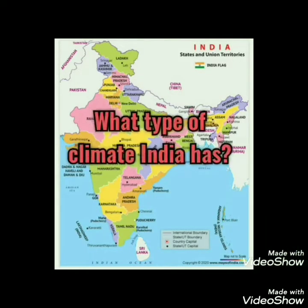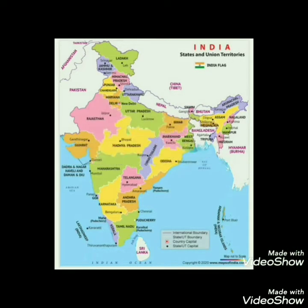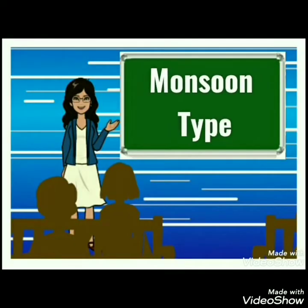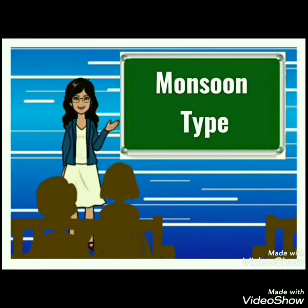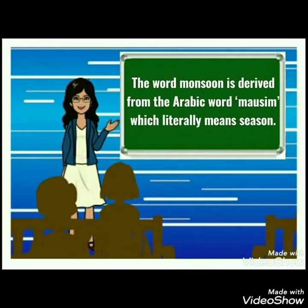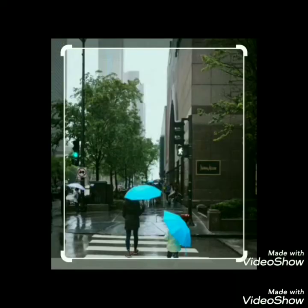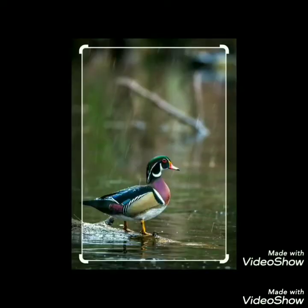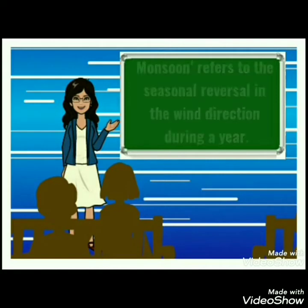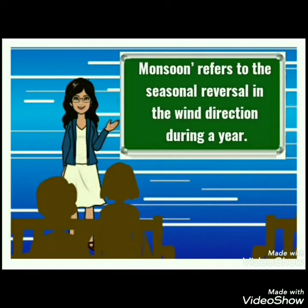Any ideas what type of climate India has? India has a monsoon type of climate. The word monsoon is derived from the Arabic word 'mossim,' which means season. Monsoon is also an example of a seasonal wind. It is known as a seasonal wind because it changes its direction in different seasons.